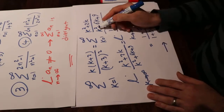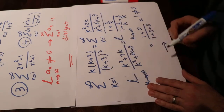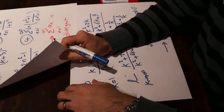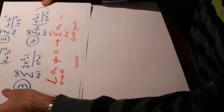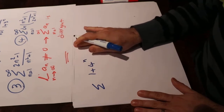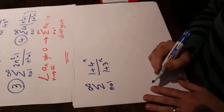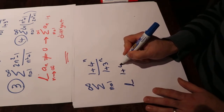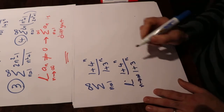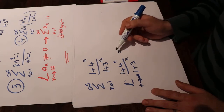Therefore the series sigma k(k+2)/(k+3)² when k changes from 1 to infinity is divergent. Now let's look at the second series: sigma (1+4ⁿ)/(1+3ⁿ) when n changes from 1 to infinity. Let's calculate the limit of (1+4ⁿ)/(1+3ⁿ) as n goes to infinity.